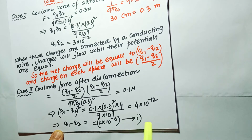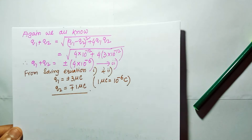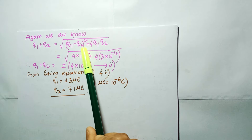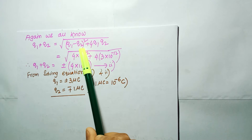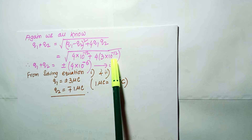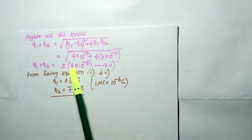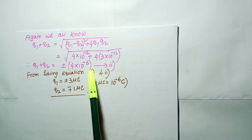This is Equation 1. We also know that q1 + q2 = √[(q1 − q2)² + 4·q1·q2]. Substituting, we get q1 + q2 = √[4×10⁻¹² + 4×3×10⁻¹²] = 4×10⁻⁶. Solving the equations for q1 + q2 and q1 − q2, we get q1 = ±3 microcoulomb.